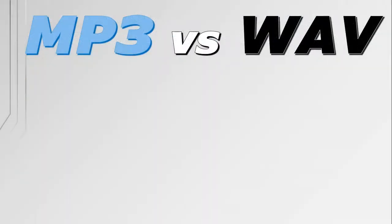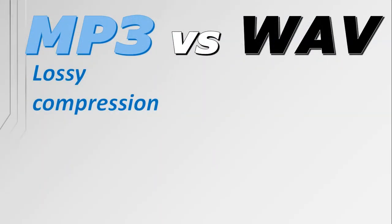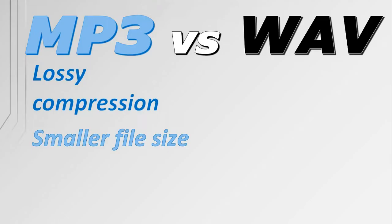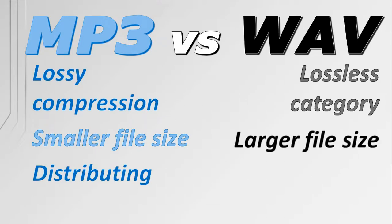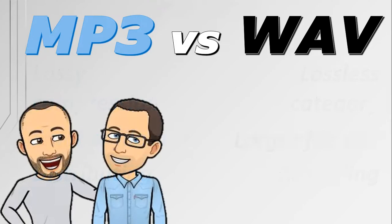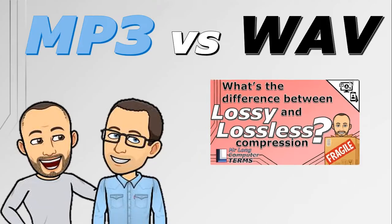In summary, an MP3 file is an audio file that makes use of lossy compression. The file size tends to be smaller, but some quality of the audio has been sacrificed, which is ideal when distributing audio files or making them available for downloading or streaming online. A WAV file is an audio file that falls under the lossless category — the file size is much larger because the sound quality is so much better, and it is ideal for recording or mixing tracks before you create a final product for publishing online. We will make another video in the future about the difference between lossy and lossless compression.